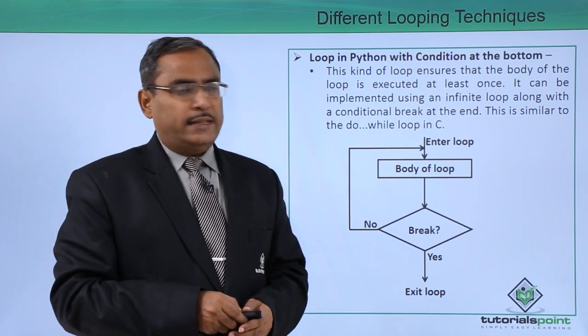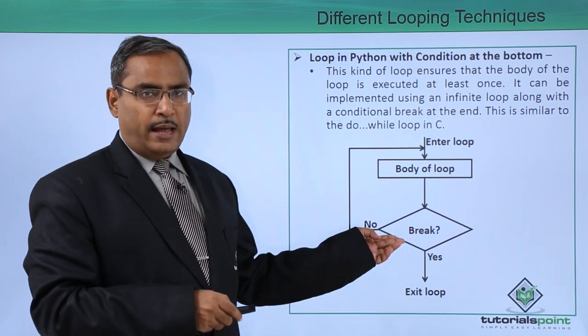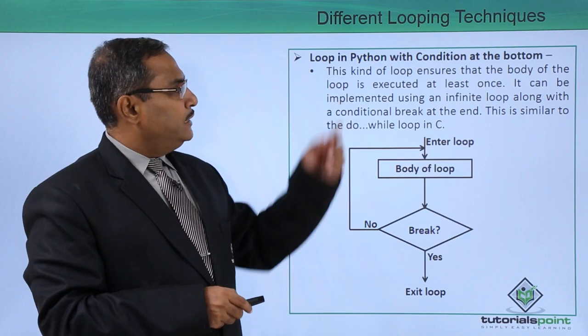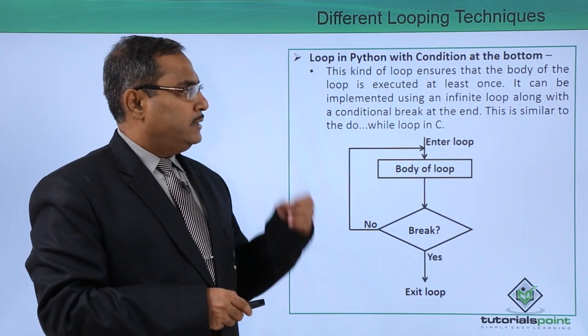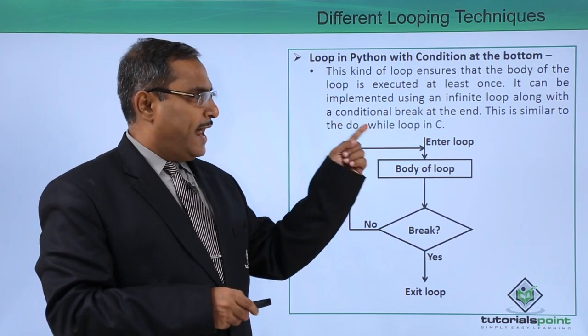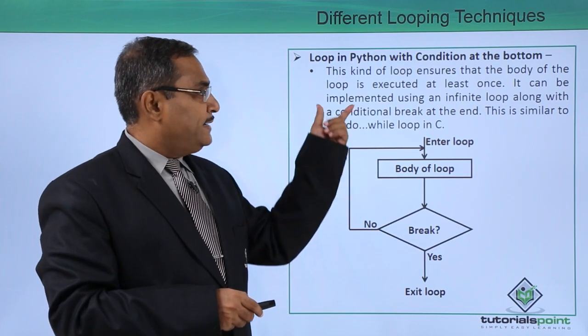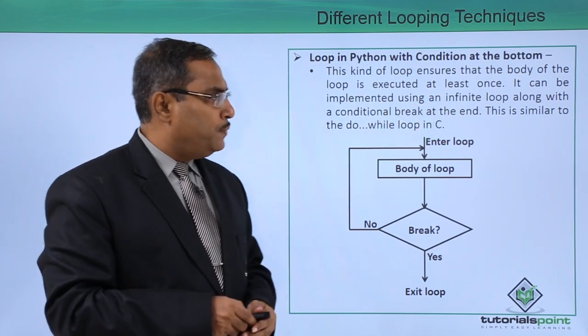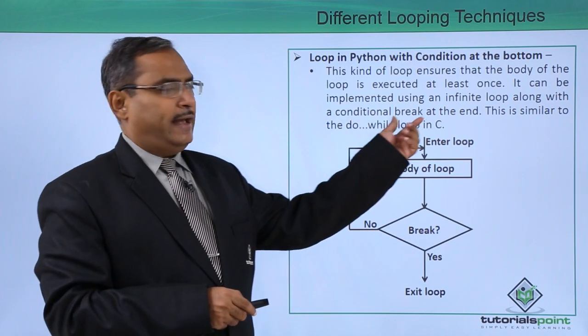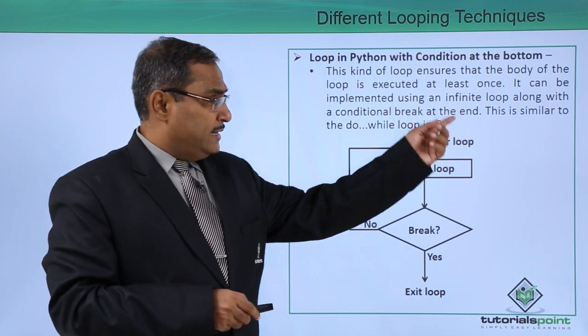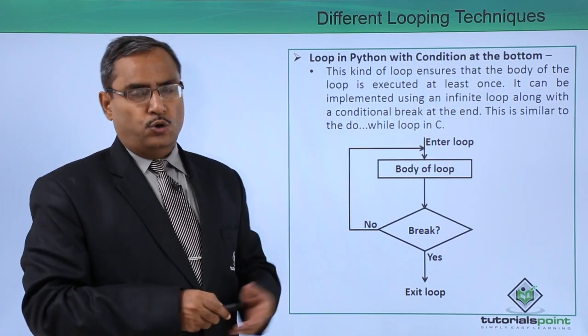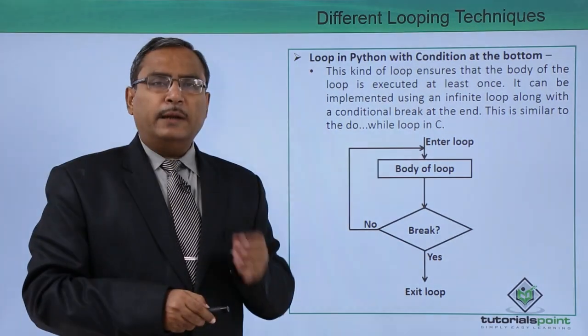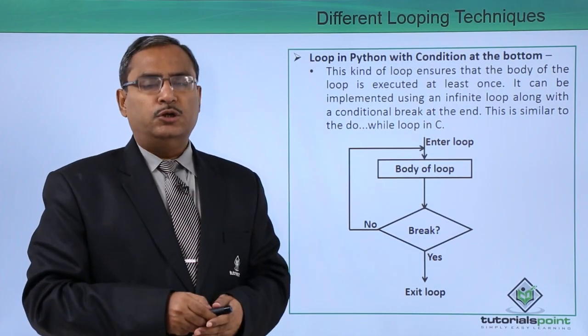Loop in Python with the condition at the bottom. Now here you see we are having this condition at the bottom. This kind of loop ensures that the body of the loop is executed at least once and it can be implemented using infinite loop along with the conditional break at the end. This is similar to do while loop in C. But in Python we do not have the do while loop.